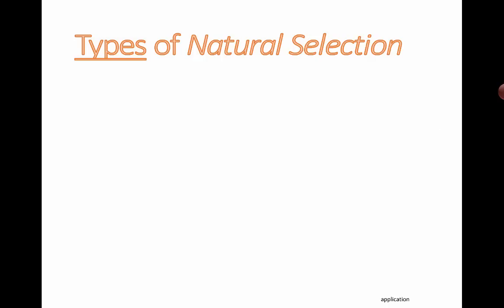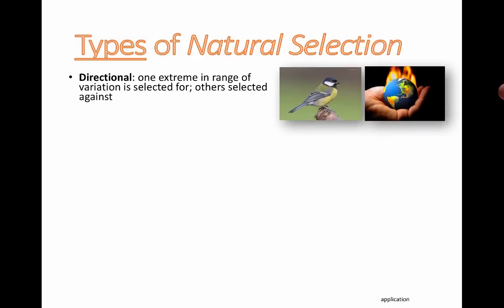There are basically three types of natural selection. One is directional. For example, if we're talking about human evolution, if only tall people could survive, then all short people and all medium-sized people would die. That's very extreme. That would be an example of directional selection. For humans, it's more about average, but directional means only one extreme or the other extreme is actually selected for.